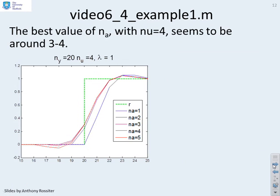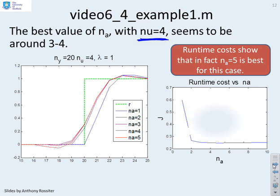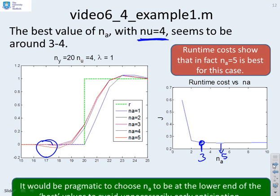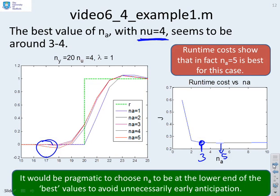Same example, but now I've increased the value for Nu. I've given myself more degrees of freedom. And now, if I plot all the values for J, you can see that the best value is actually here at NA equals 5. But you could make an argument that pragmatically speaking you might go with 3 because the difference between 3 and 5 is minimal and perhaps you don't want some of this excess non-minimum phase behavior. My suggestion is often pragmatic to choose NA at the lower end of the best values to avoid unnecessary early anticipation.